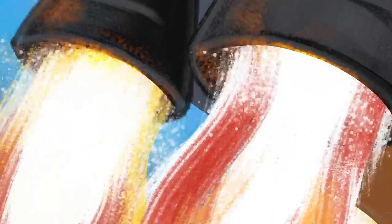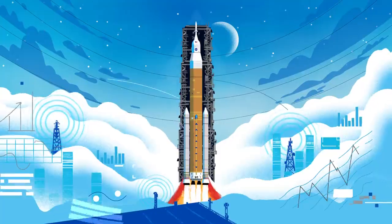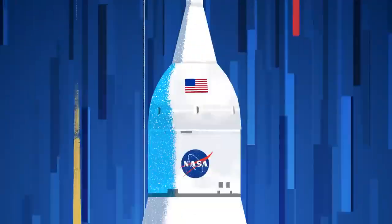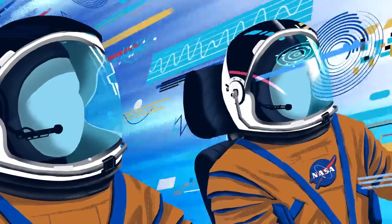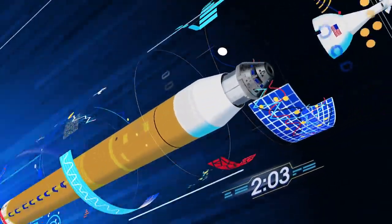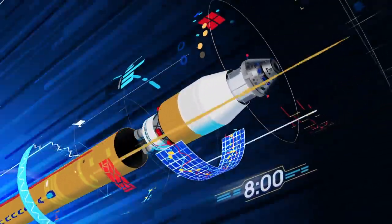Once ignited, there was no stopping what comes next. All four RS-25 engines and the two solid rocket boosters come to life thundering our crew upwards. Two minutes after ignition, the solid rocket boosters are spent and released. Eight minutes after launch, the core stage is depleted and separated.